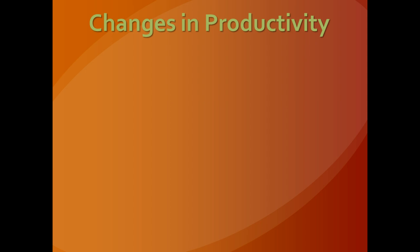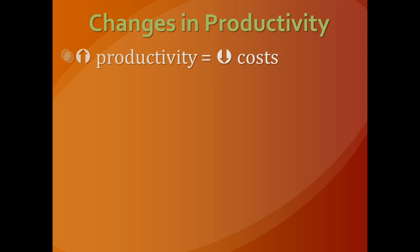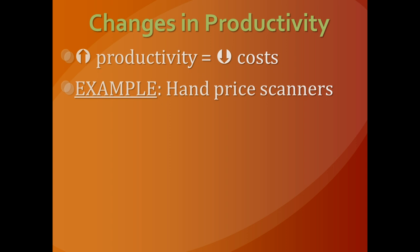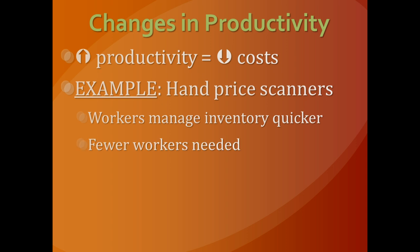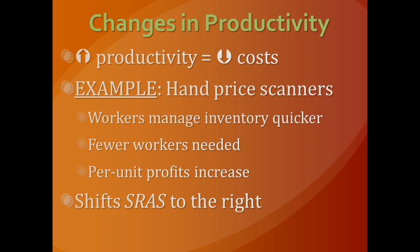When it comes to productivity, the more productive people are, the more things they can produce in the same amount of time or with the same resources, which lowers the cost per unit of producing things. When you lower the cost per unit you increase profits, and when profits rise businesses are willing to make more stuff. For example, hand price scanners — if you're trying to keep track of inventory in a large store, you only have to hire one person to scan all the merchandise instead of sending an army of people to count everything by hand. That lowers time, reduces workers needed, and significantly raises profit per unit. We would expect a right shift in the short-run aggregate supply curve because of this increase in profit.